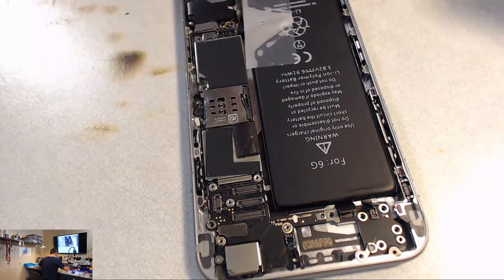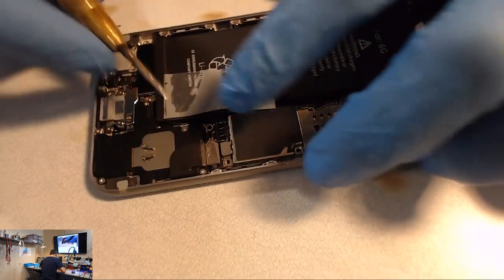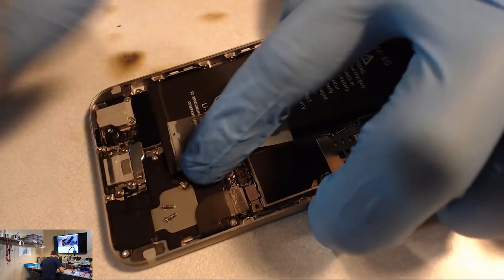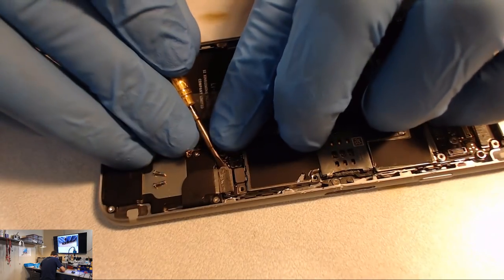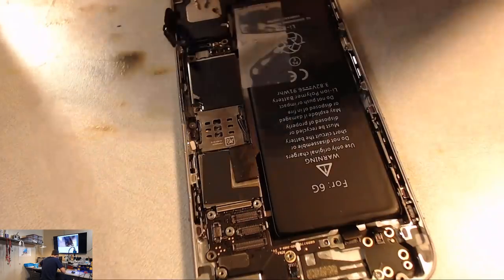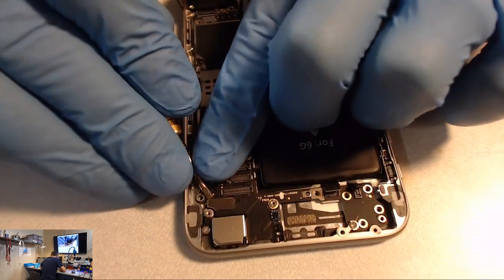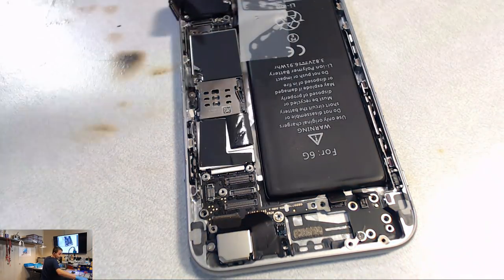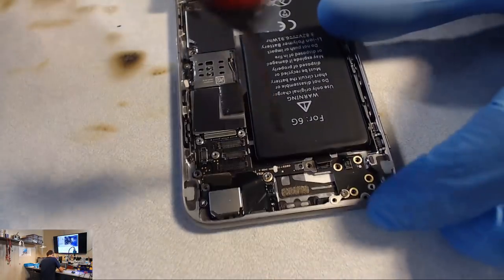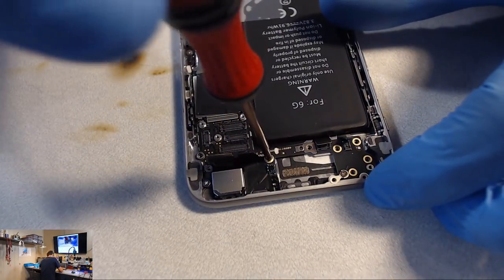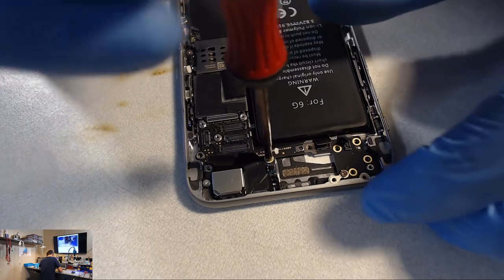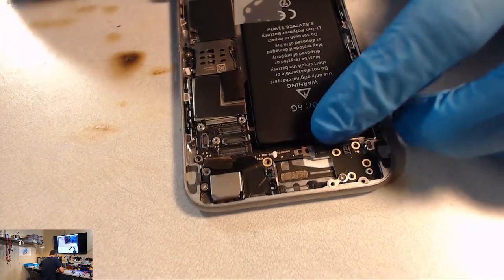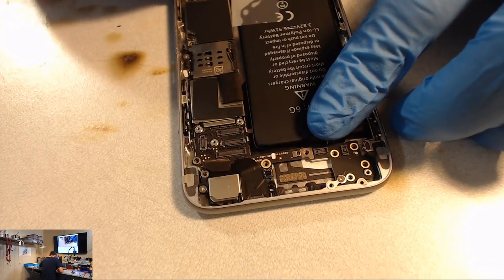We'll take that screw out, disconnect our little antenna, being sure to jab the screwdriver up under the board. We'll disconnect our camera. I think we're clear to take the board out and see what is going on.